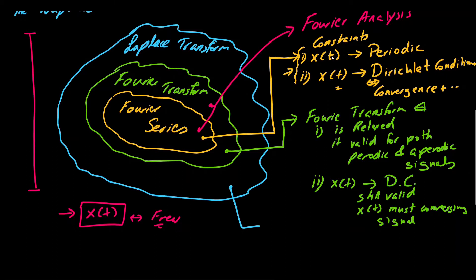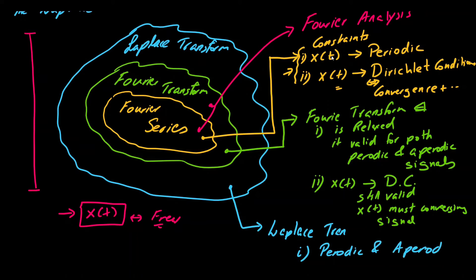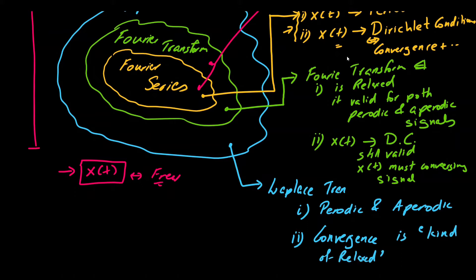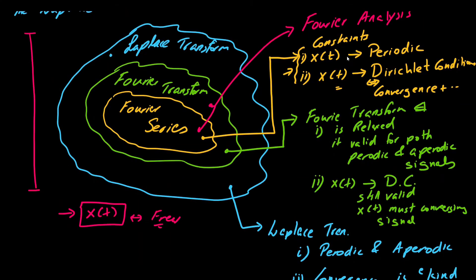Lastly, we have the Laplace transform. The first condition is relaxed — it is valid for both periodic and aperiodic signals. Moreover, the second condition, specifically of convergence, is also relaxed by means of the region of convergence of the Laplace transform. So we can say that the Laplace transform has the Fourier transform as a special case, and the Fourier transform has the Fourier series as a special case. This is our most general transform.